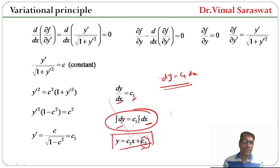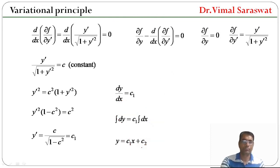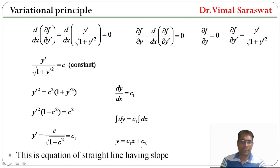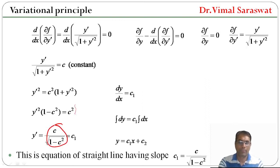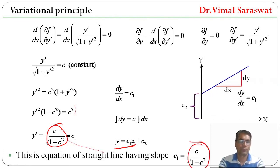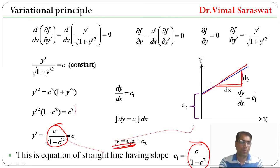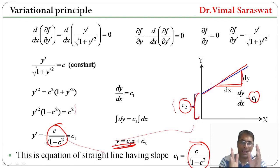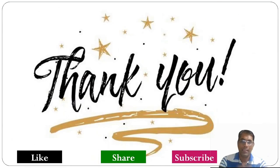The equation y = c1x + c2 is clearly the equation of a straight line with slope c1 = c / √(1 − c²) and y-intercept c2. Plotting this equation gives a straight line. Therefore, it is clear that the shortest distance between any two points is always a straight line. Here we end our session. Goodbye.